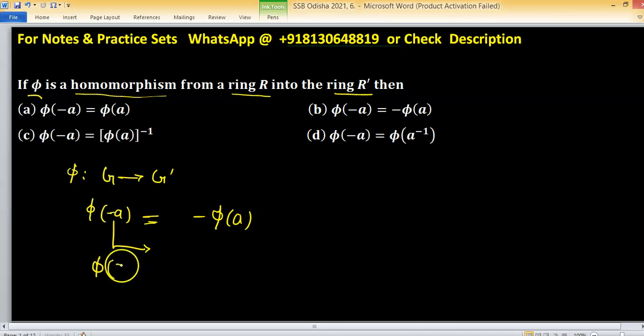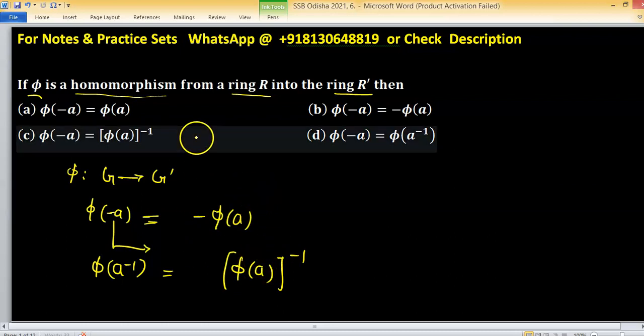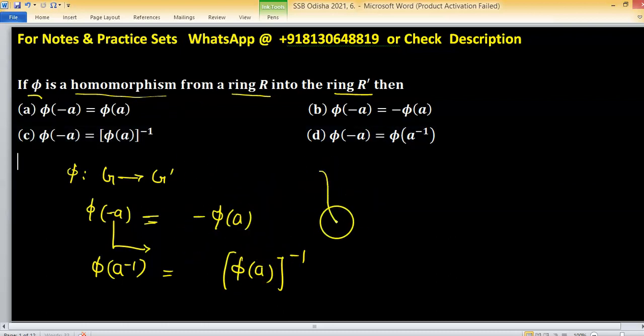But when this is multiplicative inverse, then phi of A inverse, and then take inverse of this. So which one option is correct? Same concept in a ring.